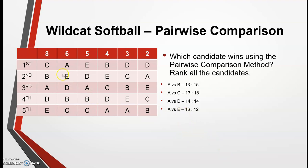Now A versus E: A is ranked over E in column 1, so A gets 8. In column 2, A is higher, so A gets 6. In column 3, E is higher, so E gets 5. In column 4, E is higher, so E gets 4. In column 5, E is higher, so E gets 3. In column 6, A is higher, so A gets 2. A gets a total of 16 votes (8 plus 6 plus 2), and E gets a total of 12 votes (5 plus 4 plus 3).